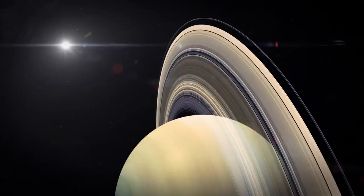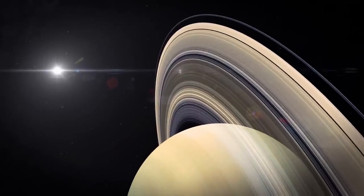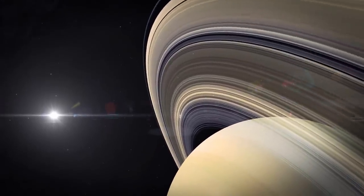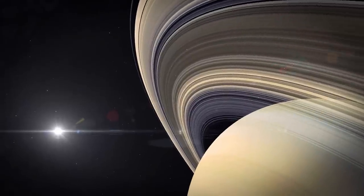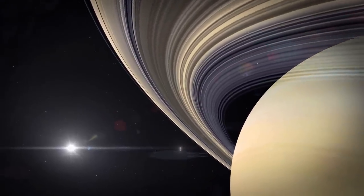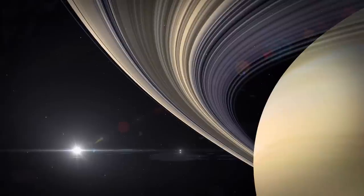You can see that these rings do not touch each other. They are all separated by dark areas with little matter called divisions. Moreover, within a ring, there are also other areas identified as gaps where the density of particles is very low.